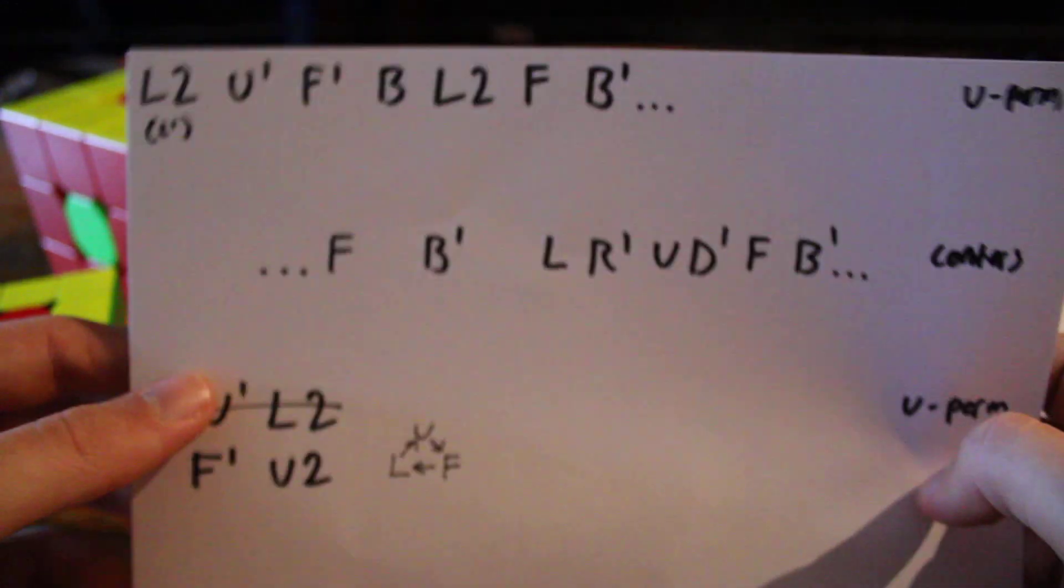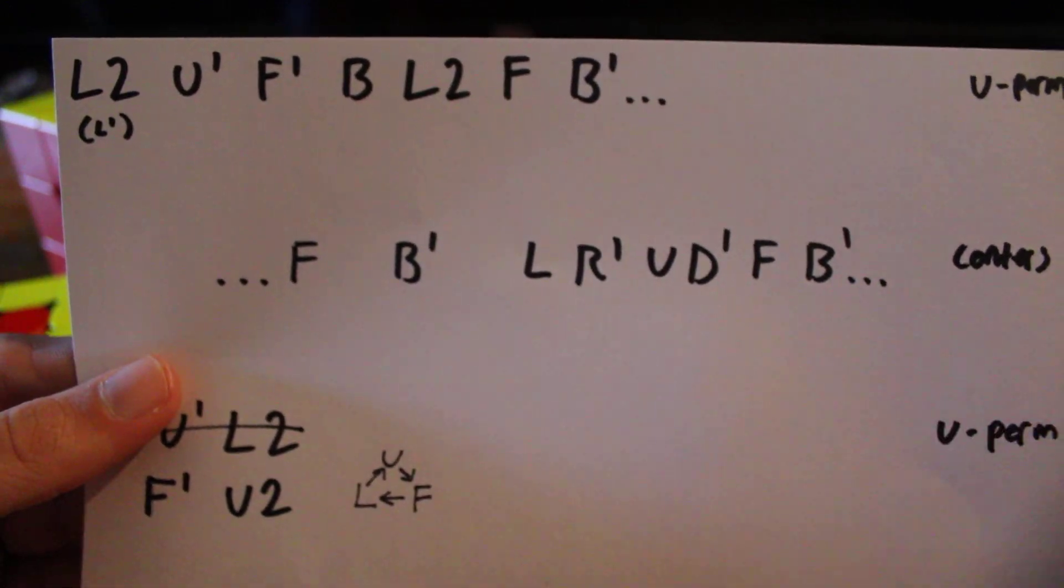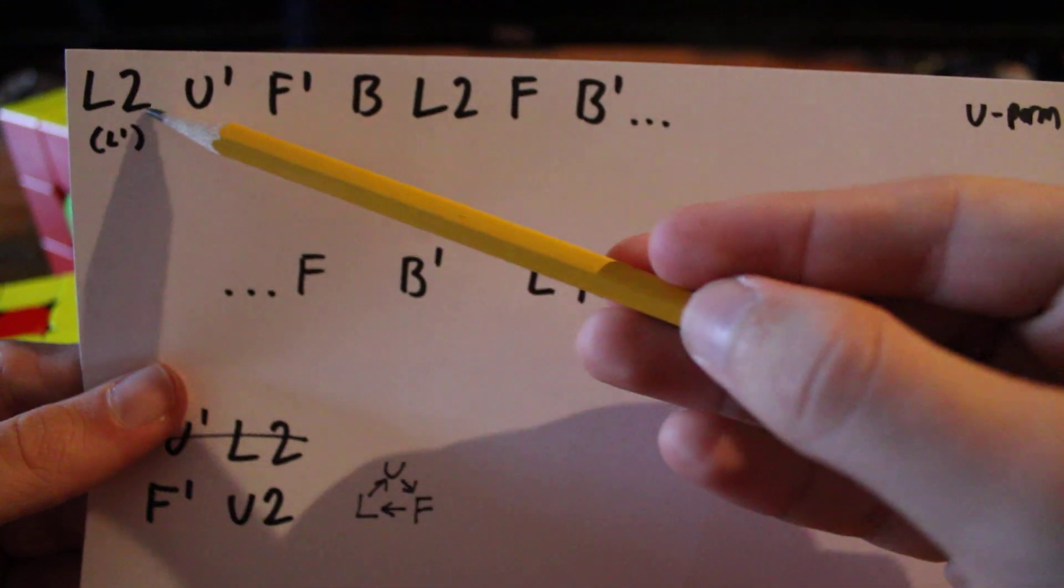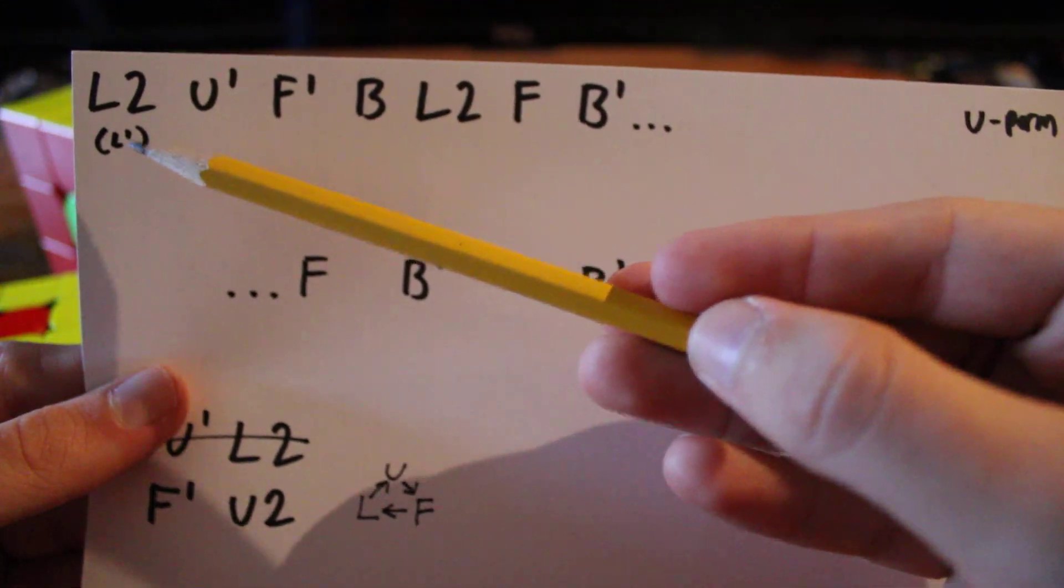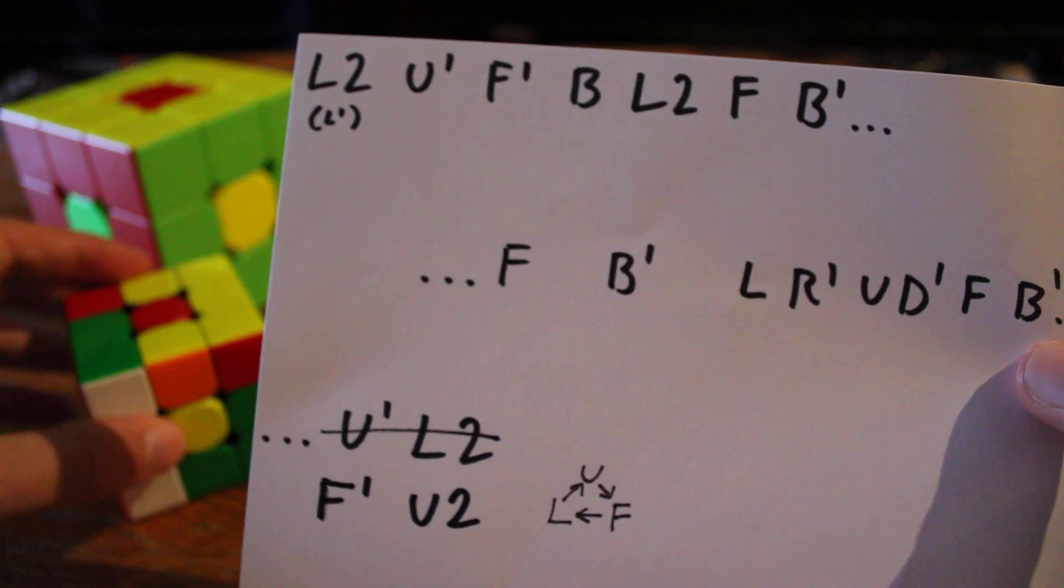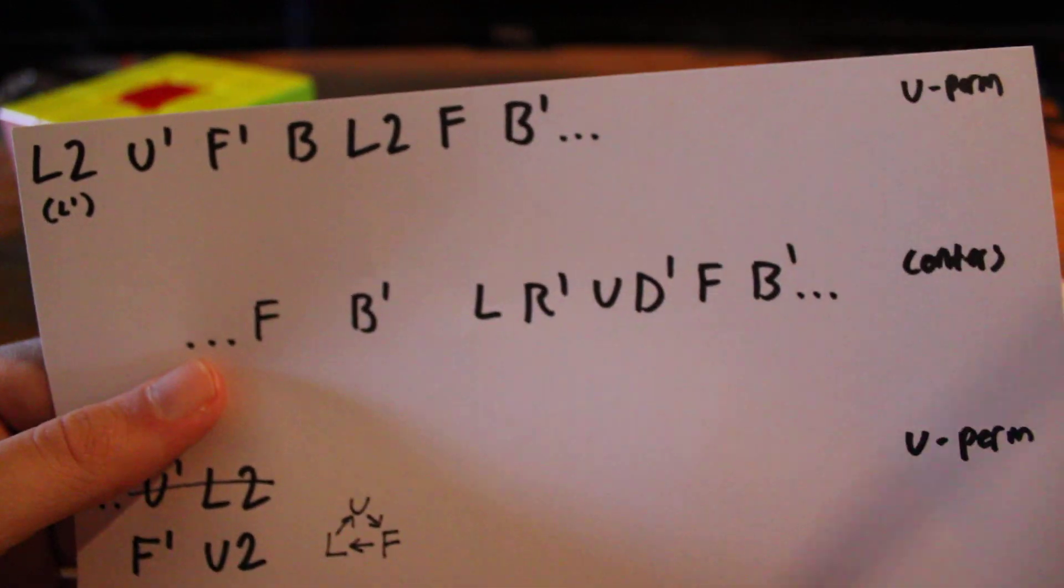Now, the way I perform them, I happen to insert the center permutation algorithm in an interesting spot. So, this is the beginning of the U-perm right here. See, it should start with an L2, but of course, because I already had an L' done on the cube, I could just start off with an L' instead. So, it's L2, U', F', B, L2, F, B'.